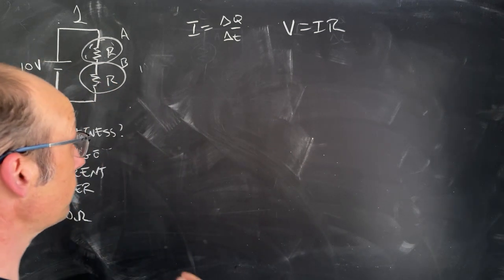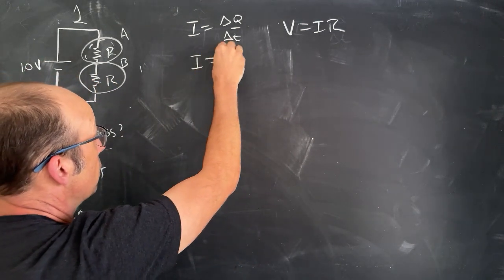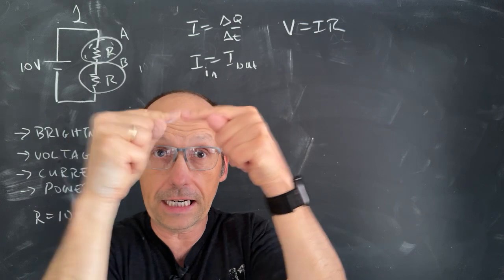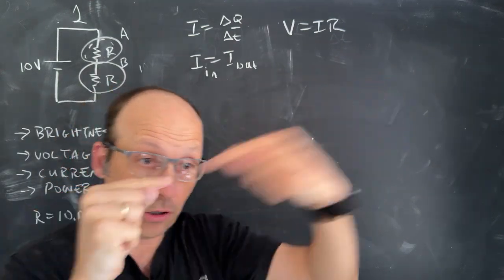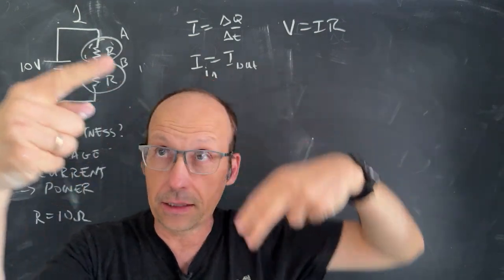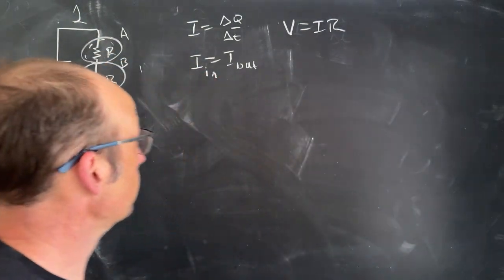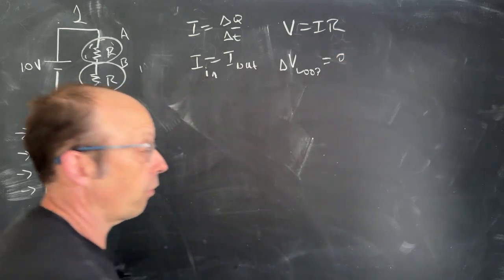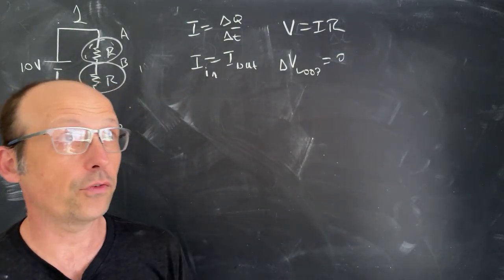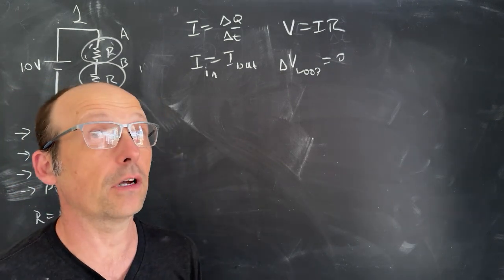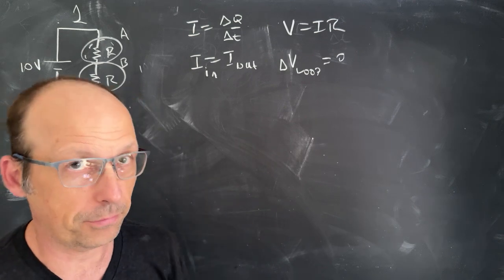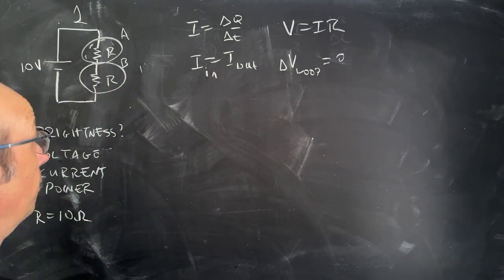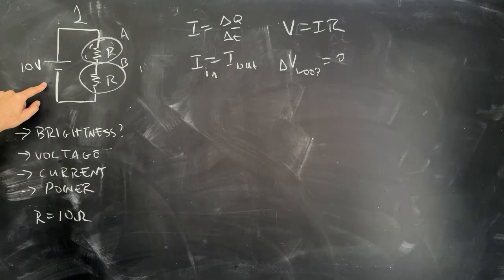The voltage drop will be negative if in the same direction as the current and positive if opposite. Next we have the junction rule: I_in equals I_out. So if you have two or more wires connected together, the current flowing in has to equal the current flowing out. Finally, the loop rule states that ΔV around a loop equals zero. Because the electric field is conservative, if you add up the change in voltage around a complete loop, you get zero.